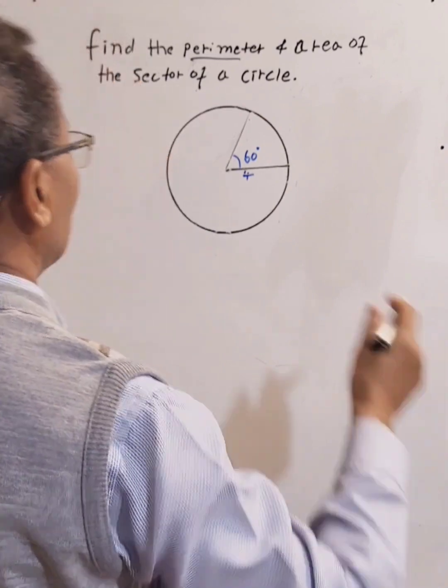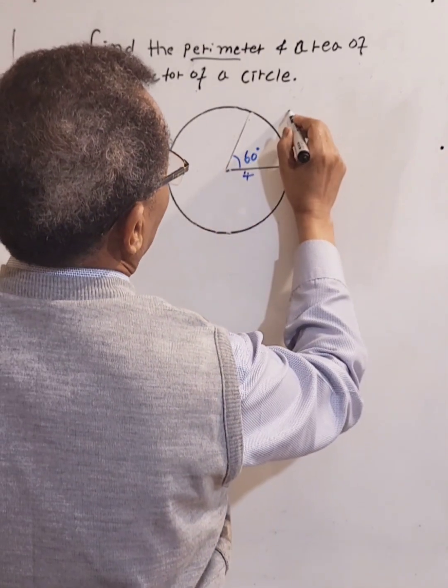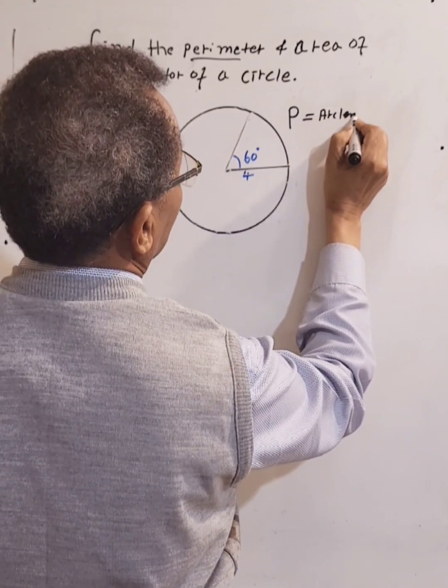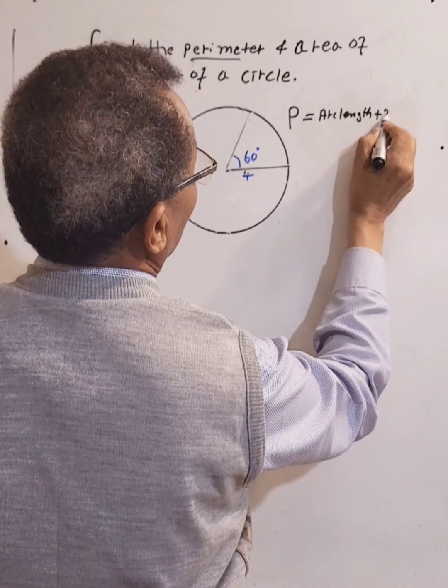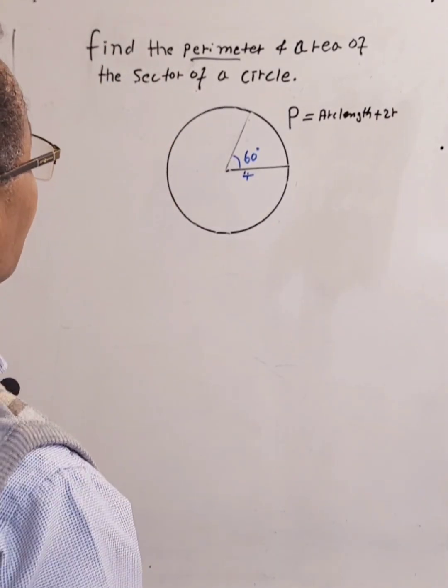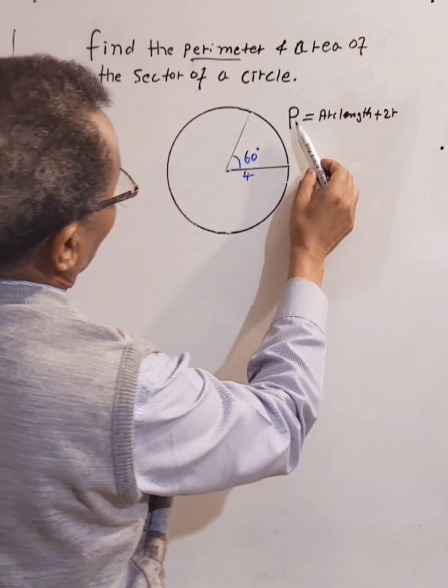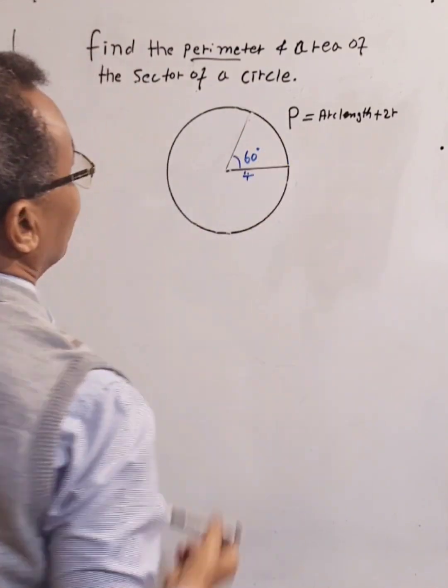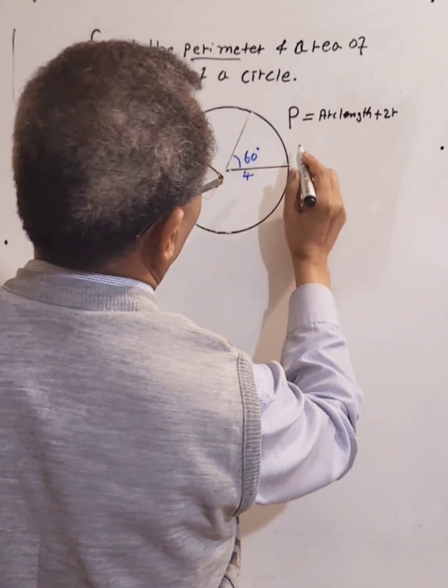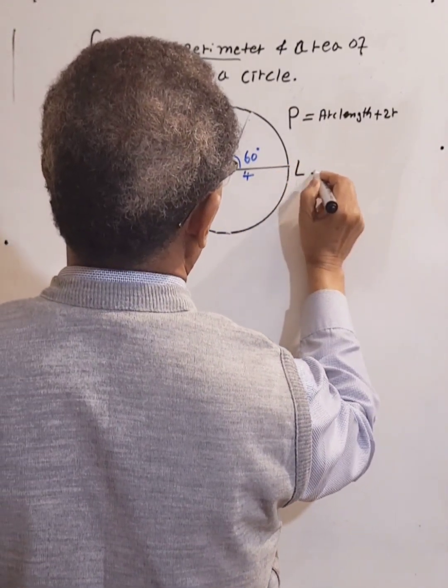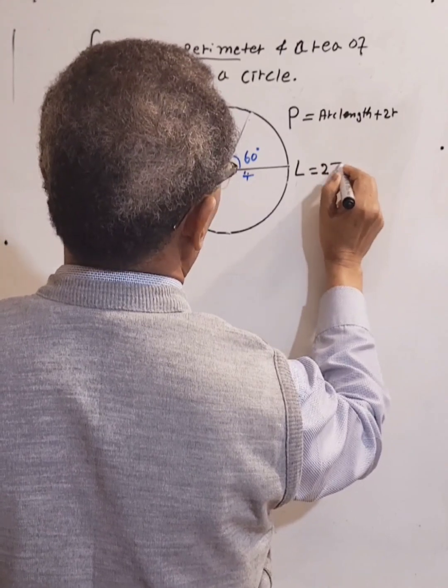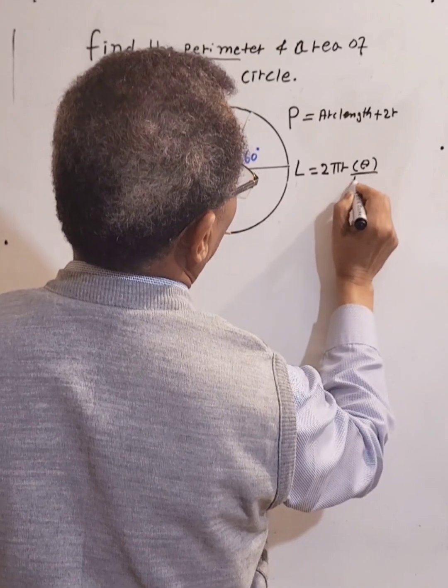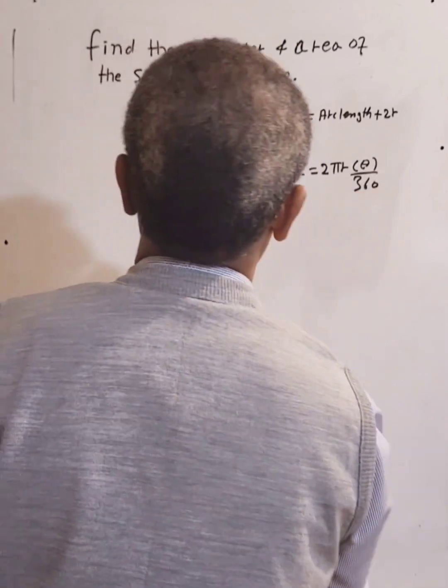Perimeter of the sector is calculated P equals arc length plus 2r. To calculate the perimeter, we need to find the arc length, which is the distance from here to here. This is calculated L equals πr times θ over 360.